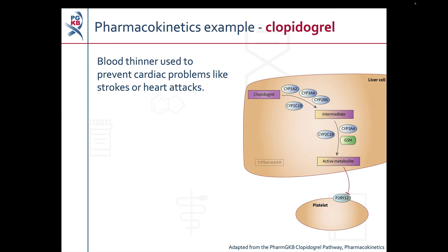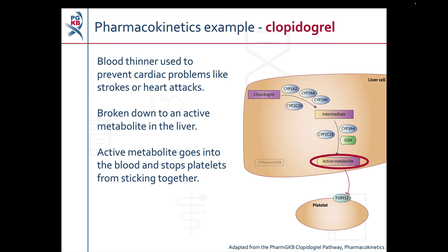For our pharmacokinetics example we are going to look at clopidogrel. Clopidogrel is a blood thinner which is used to prevent cardiac problems like strokes or heart attacks. Clopidogrel is an example of a prodrug — a drug that has to be broken down by the body before it can work. When a patient takes clopidogrel it is broken down, or metabolised, in the liver to form an active metabolite. The active metabolite goes into the blood and stops platelets from sticking together, which prevents blood clots from forming.